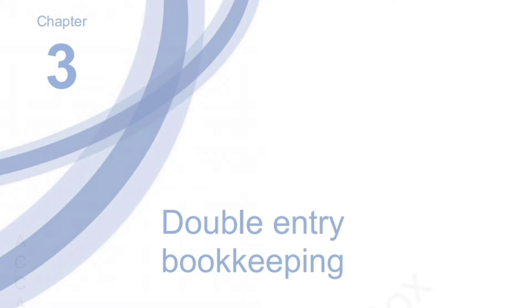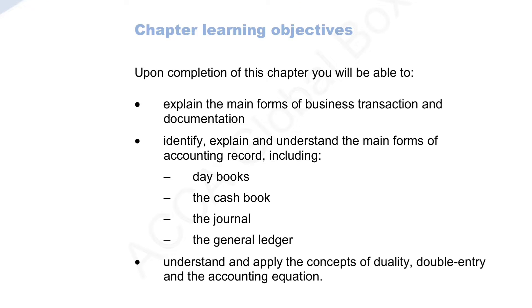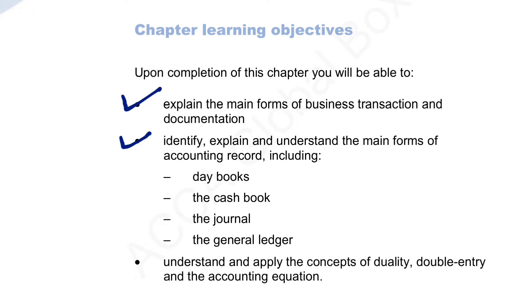Before we get into the details, let's look at the objectives for this chapter. By the end you will be able to understand the main forms of business transactions and the documents that accompany them, the main forms of accounting records including day books, cash books, the journal and ledgers, and key accounting concepts such as duality, double entry, and the accounting equation. These objectives will be covered over two videos, and this video focuses on business transactions and documentation.